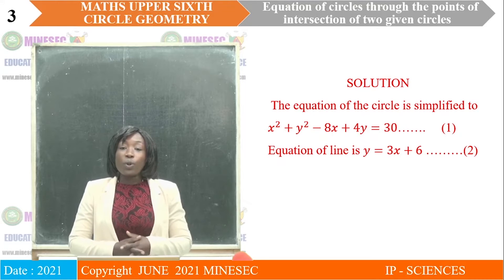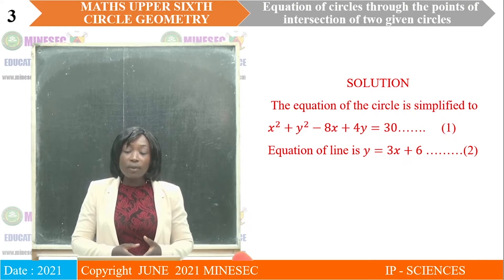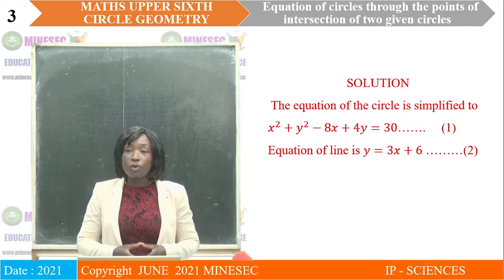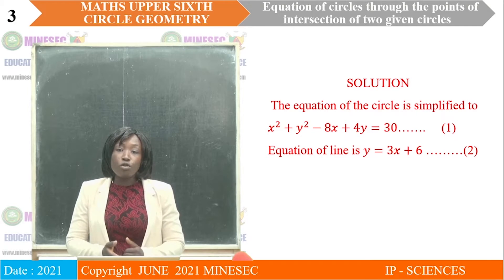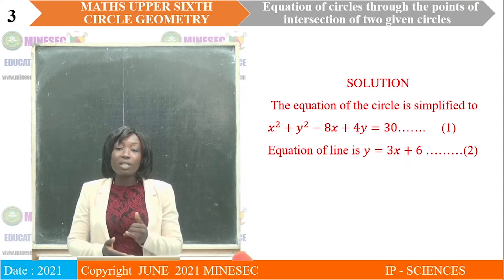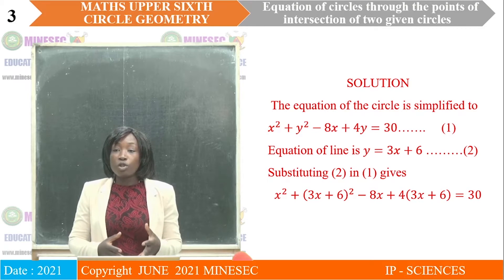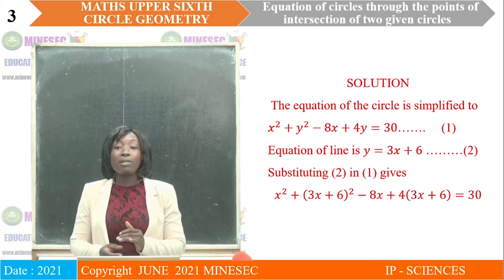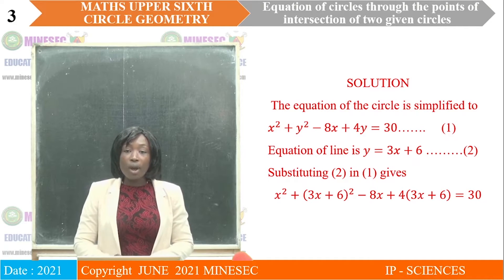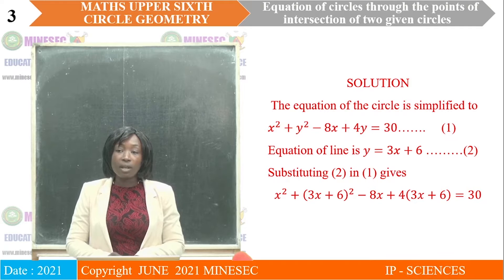The equation of the circle has to be simplified, giving x² + y² − 8x + 4y = 30. Now we have the two equations. To find the points of intersection of this line and this circle, we solve the two equations simultaneously — substituting equation 2 (the rearranged form of the line) into equation 1. So we have x² + (3x + 6)² − 8x + 4(3x + 6) = 30.